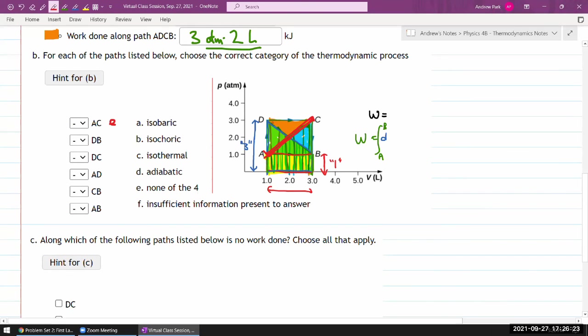DB, it's the same deal. Along this path here, we're not keeping anything constant. So none of the four. DC, okay, that is now isobaric. We are constant at three atmosphere there. So this would be A. AD, it's isochoric. We are keeping the same volume in the path A to D.